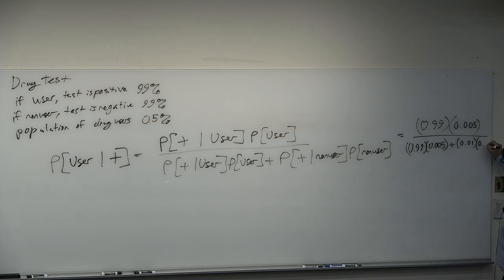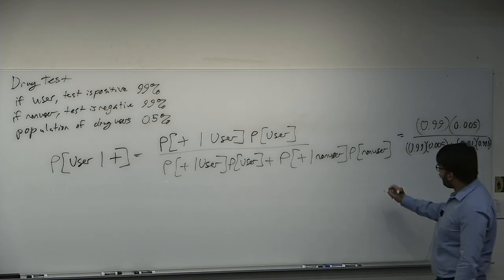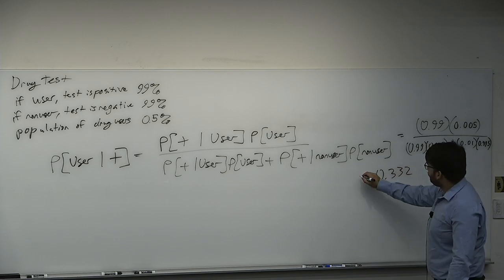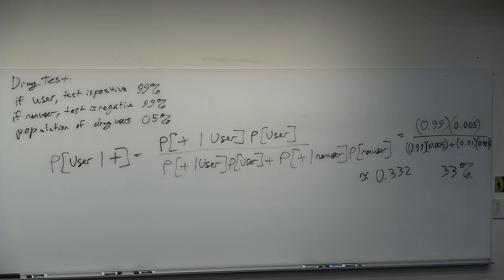Plugging that into a calculator gives approximately 0.332 — that's 33%. If you take a random person and the test comes back positive, there's only a 33% chance they actually were a drug user.